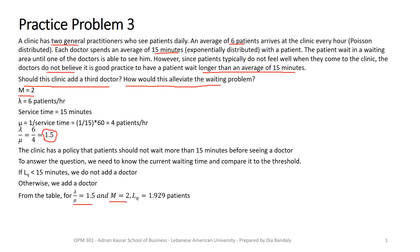In the table, we look for lambda/mu = 1.5 and m = 2, and we read LQ = 1.929. Now we find WQ = LQ / lambda. Remember, the time unit comes from lambda, which is per hour, so we multiply by 60 to convert to minutes, giving us 19.3 minutes — greater than 15 minutes.